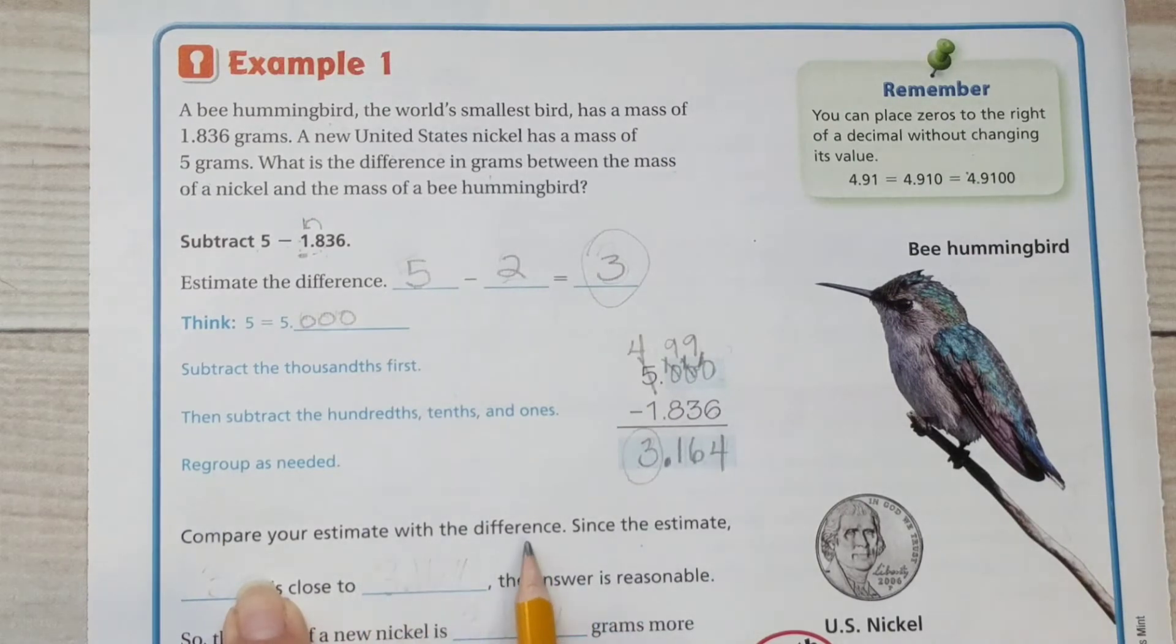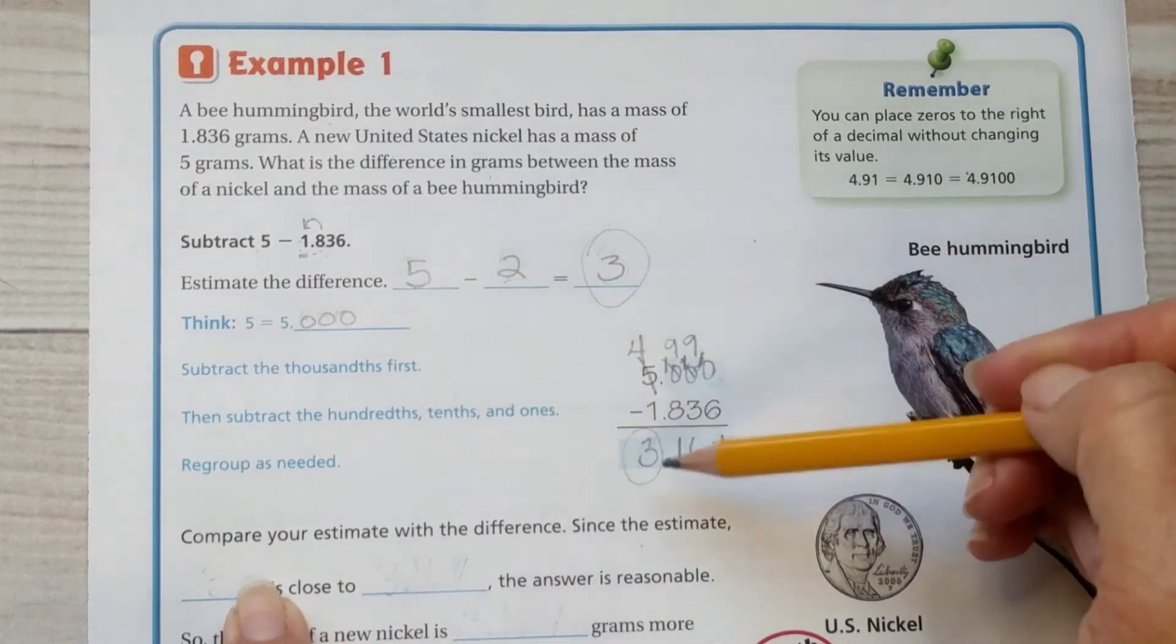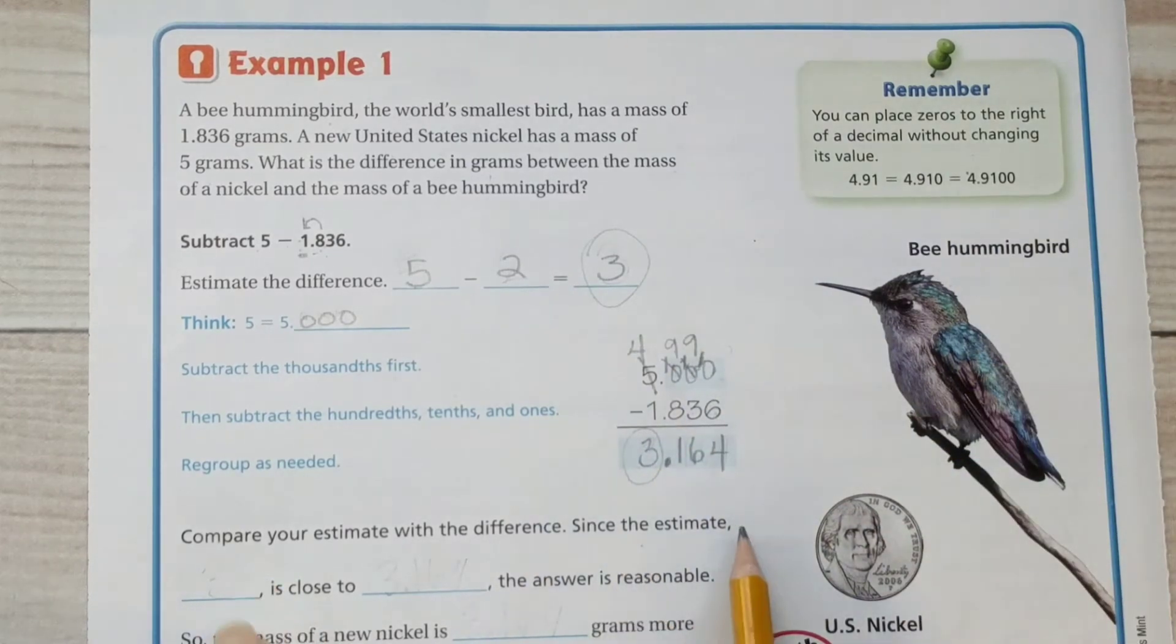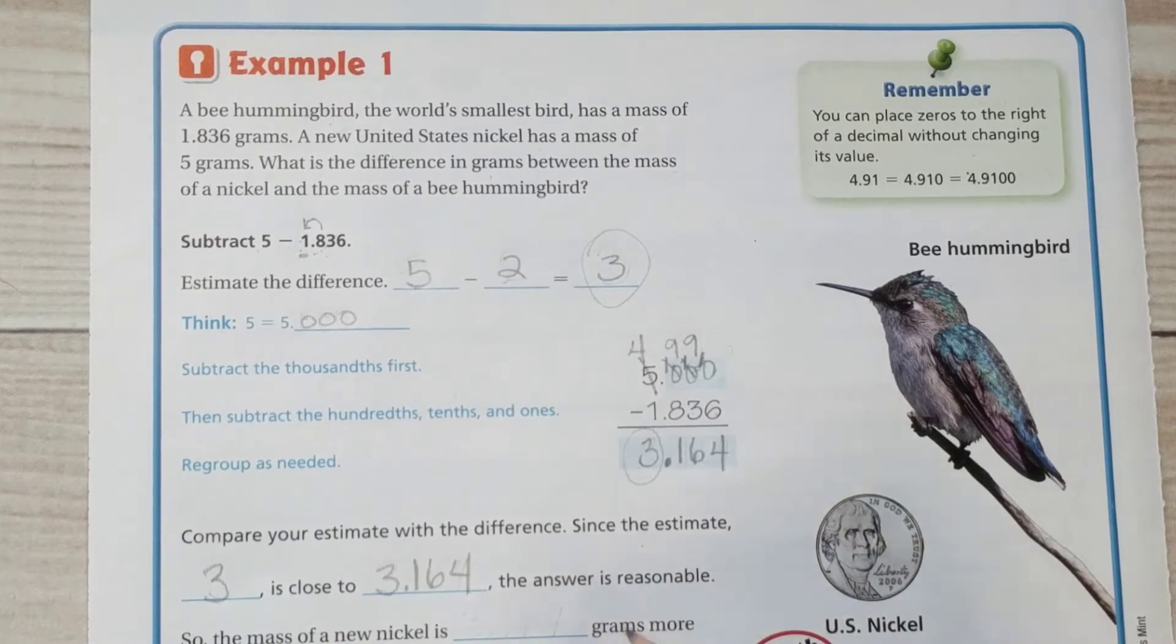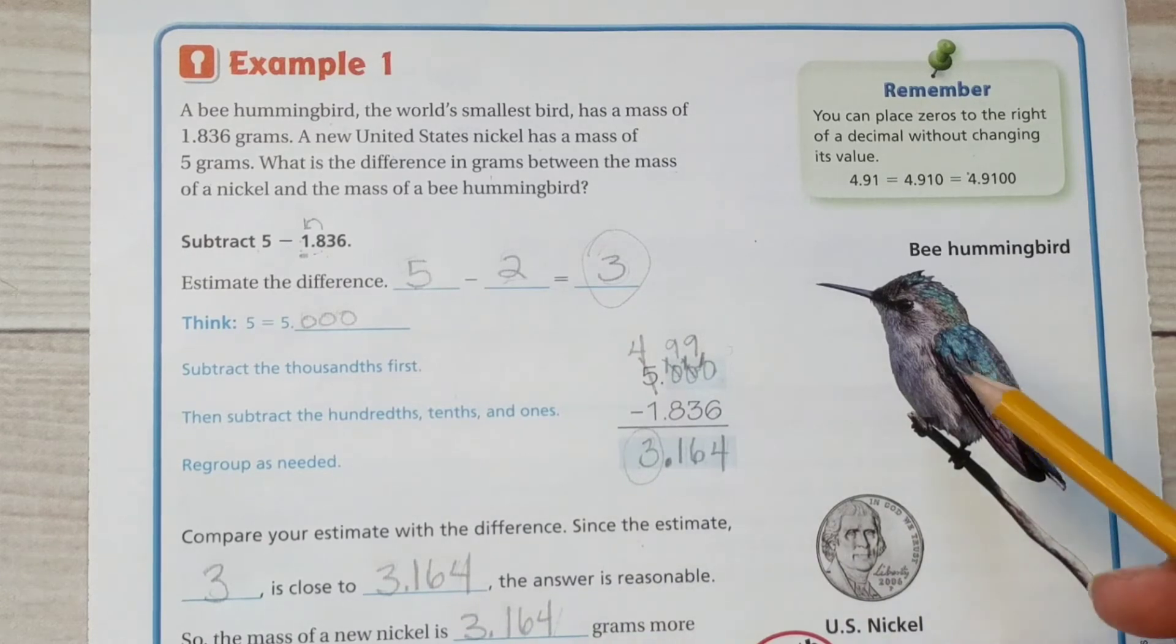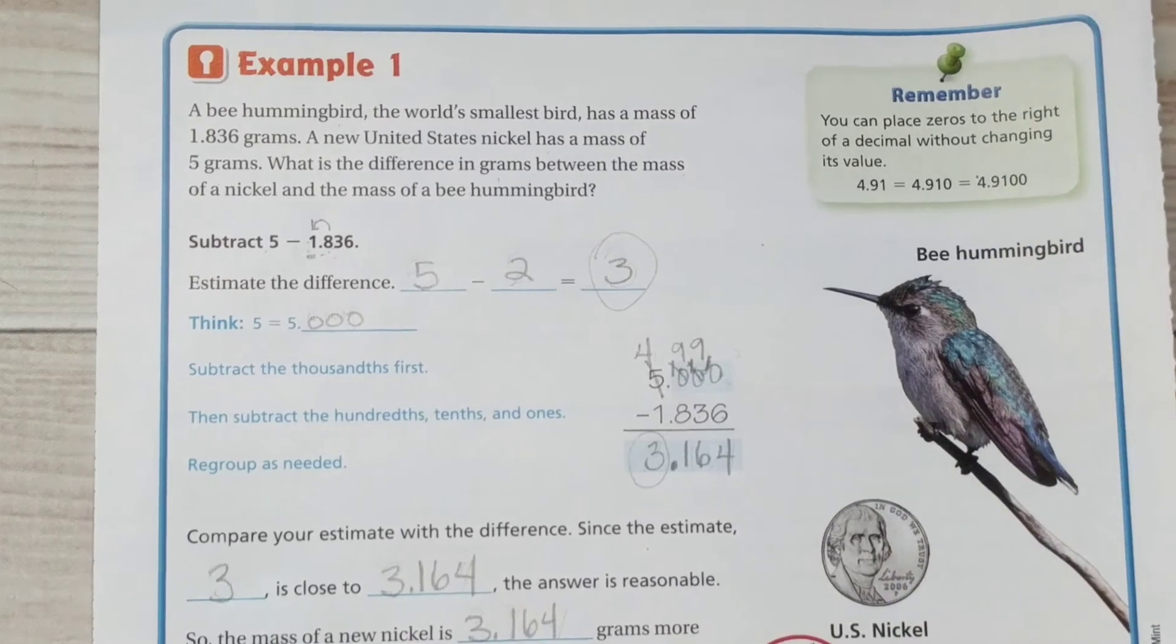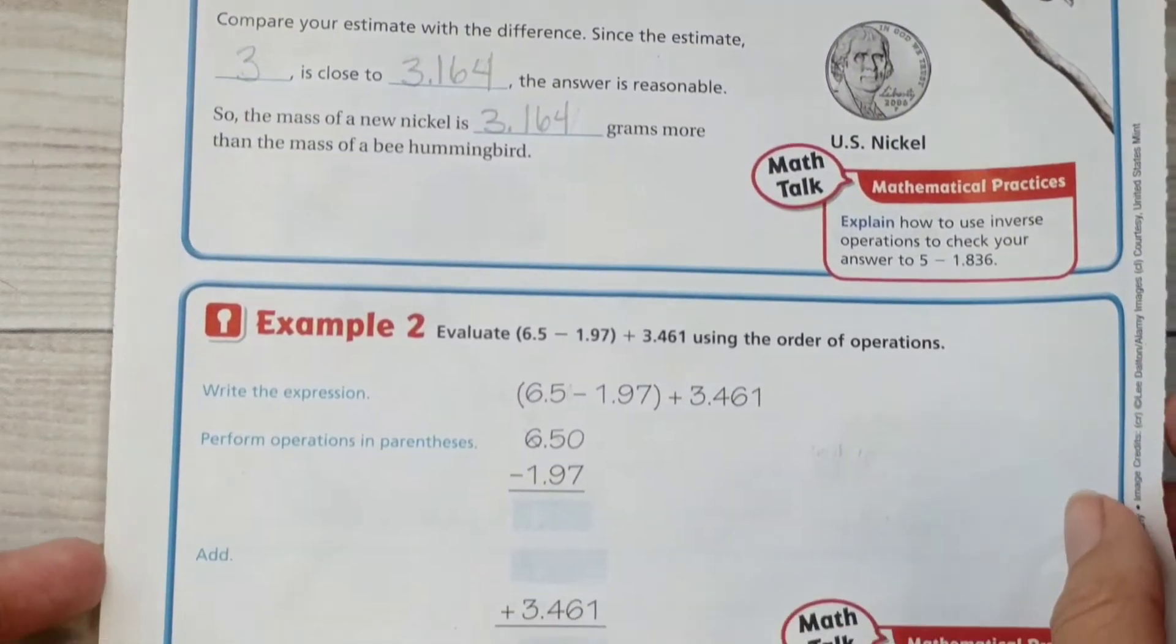Compare your estimate with the difference, which we just did. Since the estimate 3 is close to 3.164, the answer is reasonable. So the mass of a new nickel is 3.164 grams more than the mass of a bee hummingbird. That is a pretty small bird if it's that much smaller than a nickel.